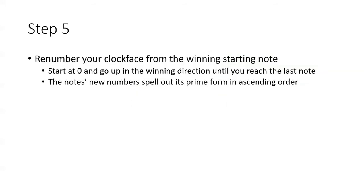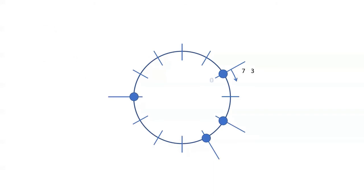So now we just have to tabulate the results. We use the starting place as 0 for a new numbering of our clock — 0, 1, 2, 3, etc. in the direction of the arrow. The pitch classes will now have new pitch class integers which spell out the prime form. Start at the marked starting place, put a 0 there, and count up in the direction of the arrow until you reach the last pitch class. In this case, we get 0, 2, 3, and 7. That is the prime form.